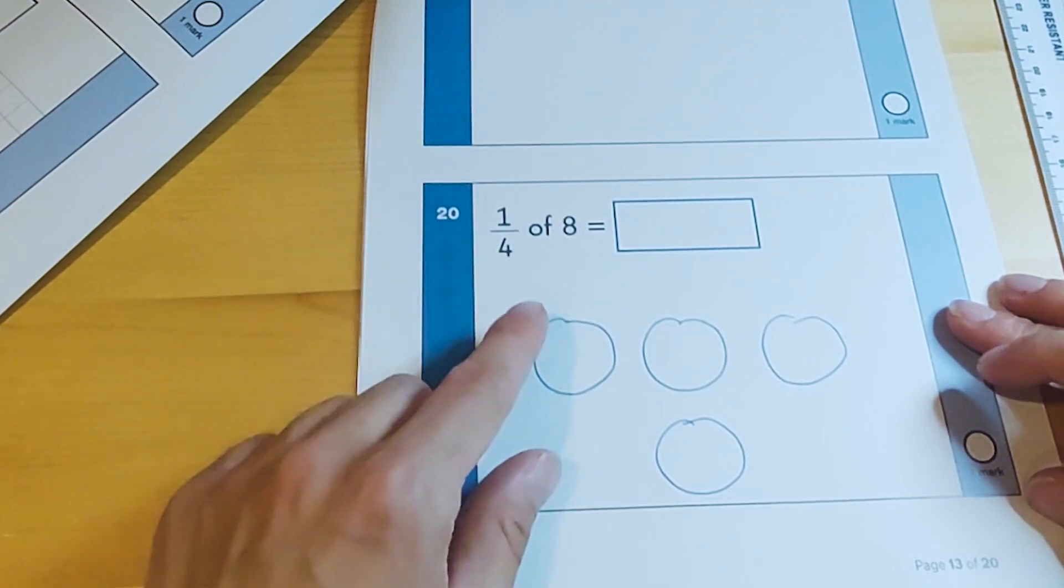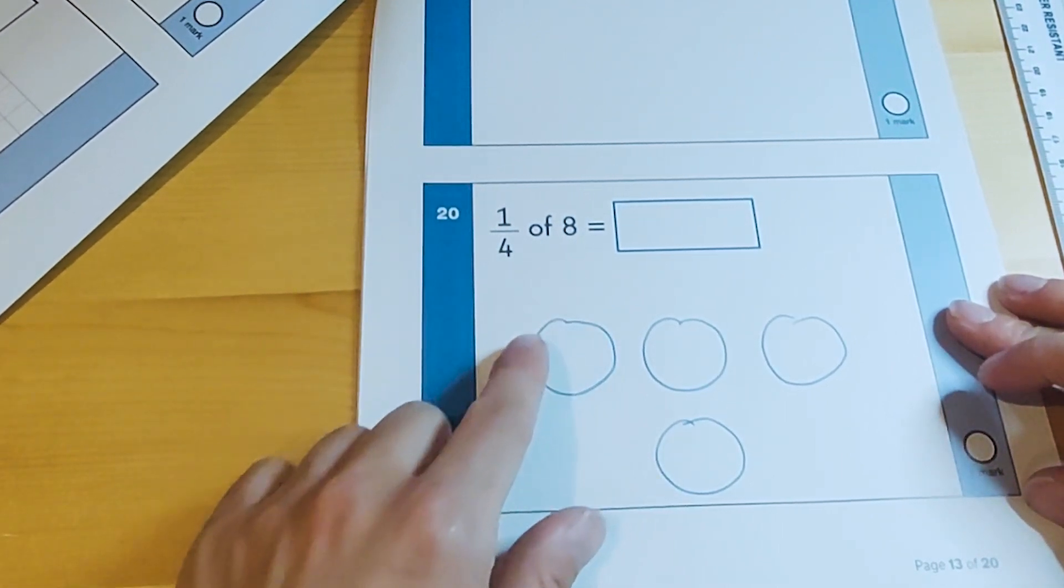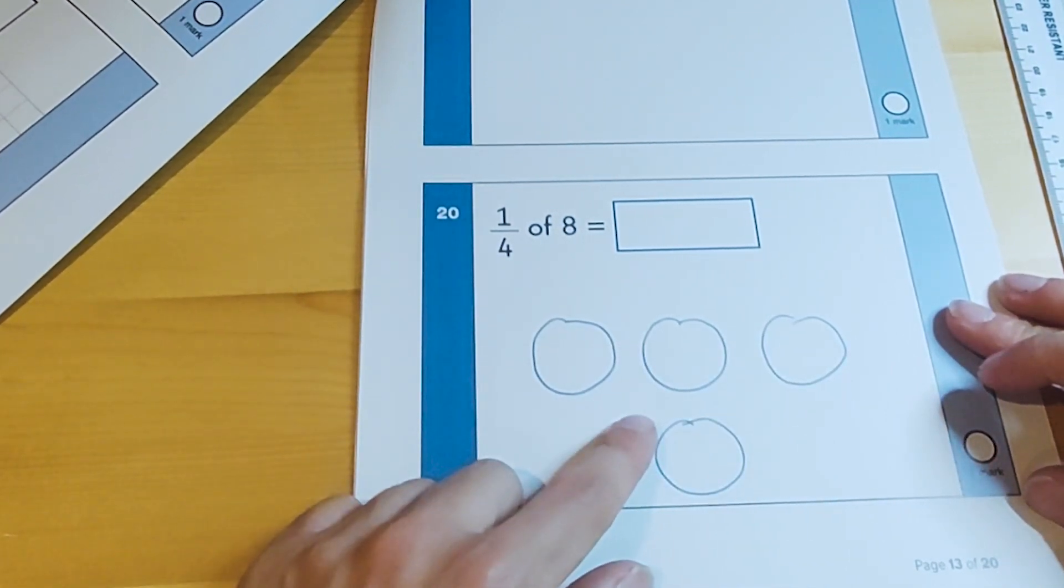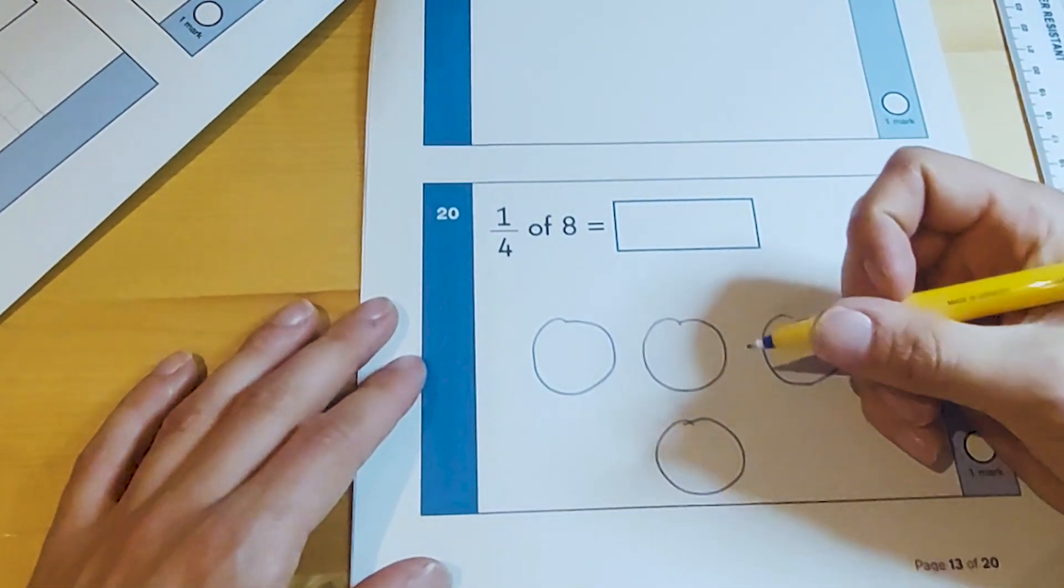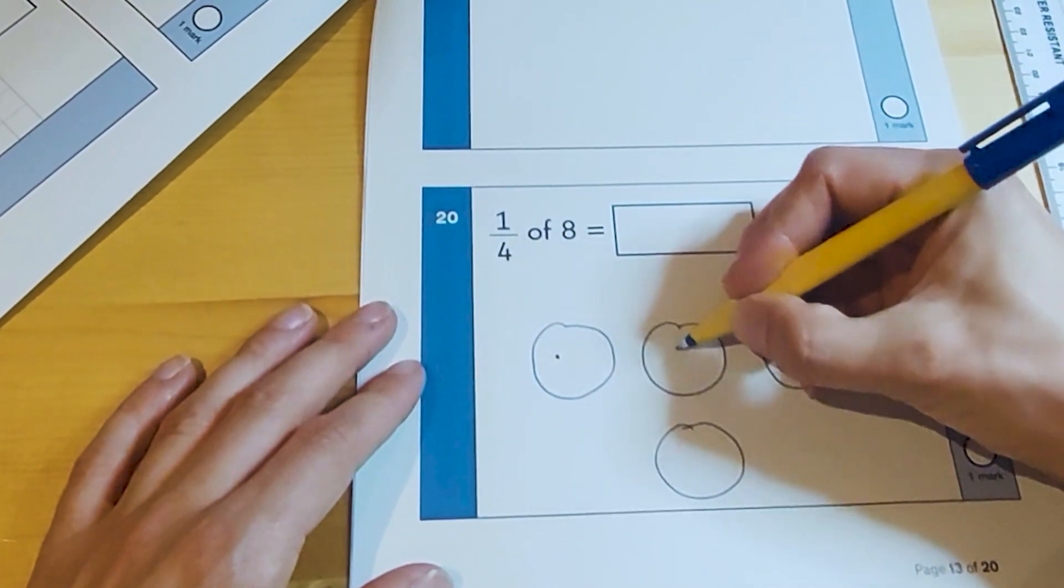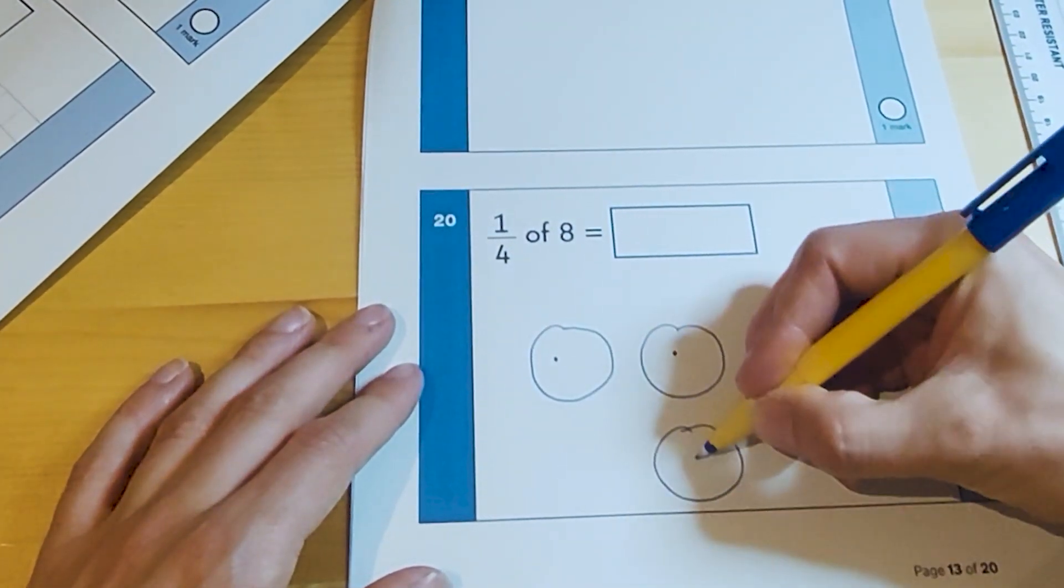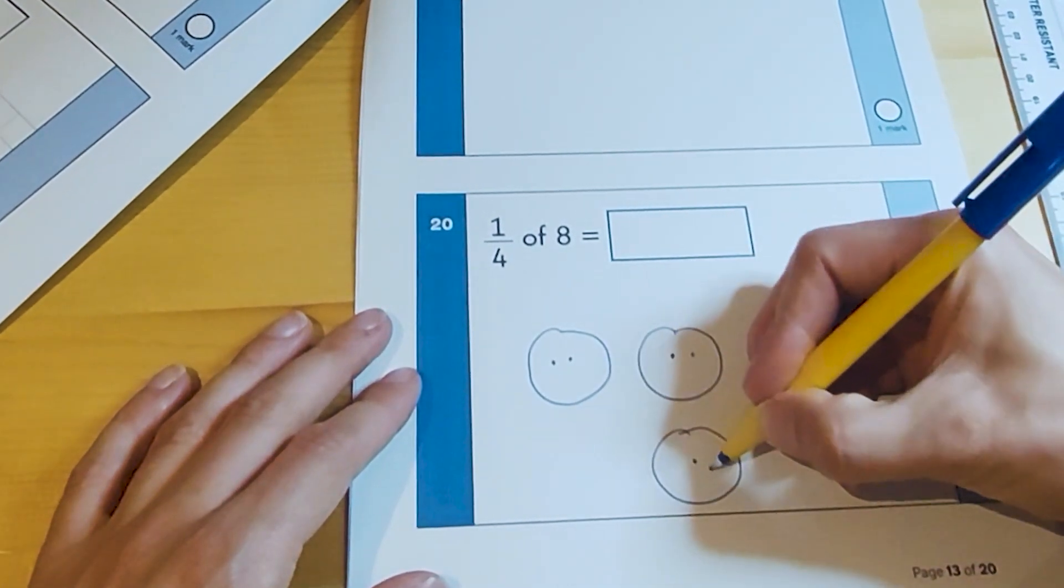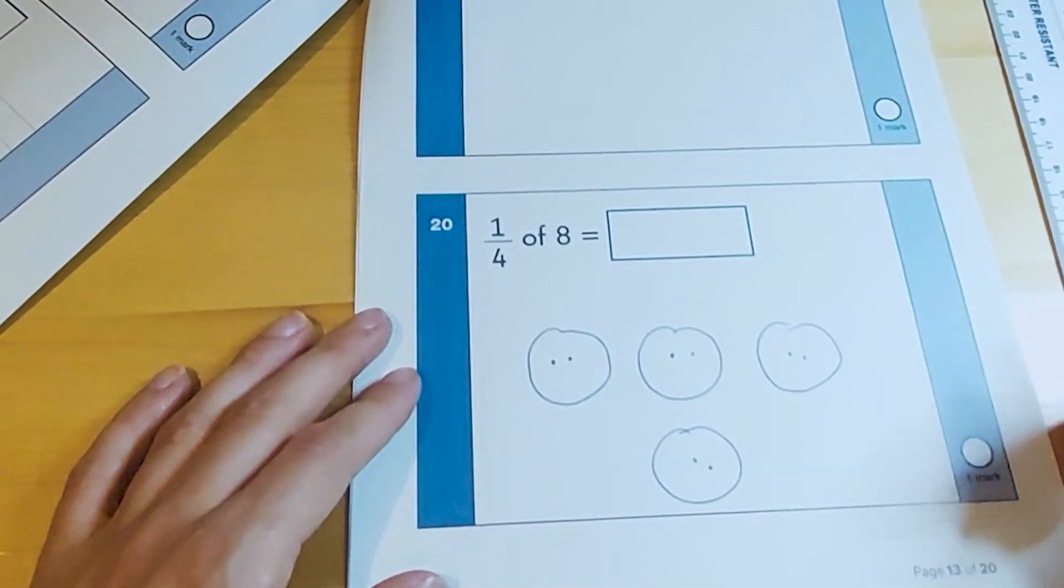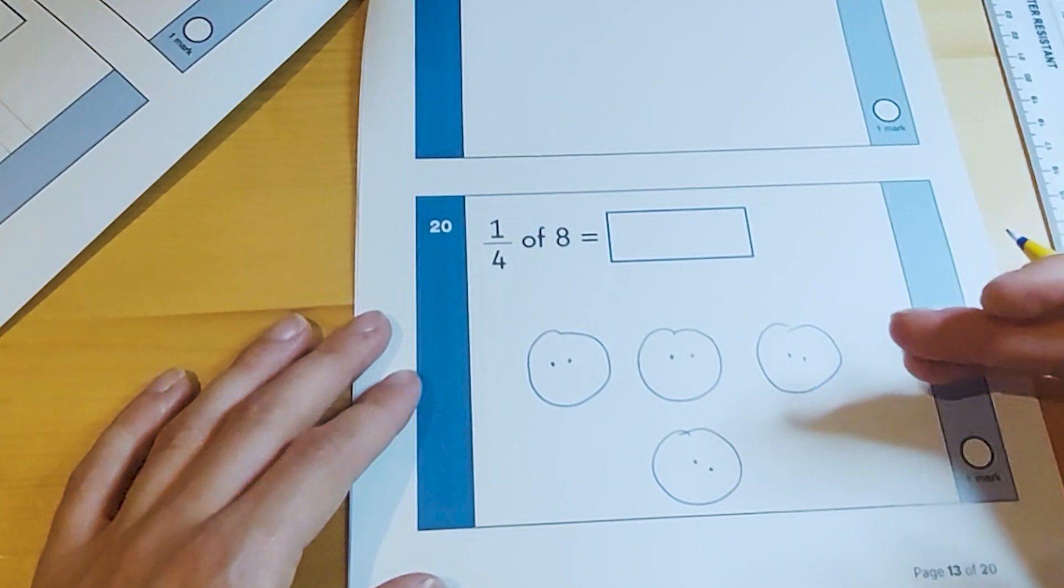You would say to them: a quarter of 8 means that we need to share 8 into four groups. Then the numerator tells us how many of those groups to count. So 8 divided into four: one, two, three, four, five, six, seven, eight. So I have 8 sweets there, I've shared them into four groups.